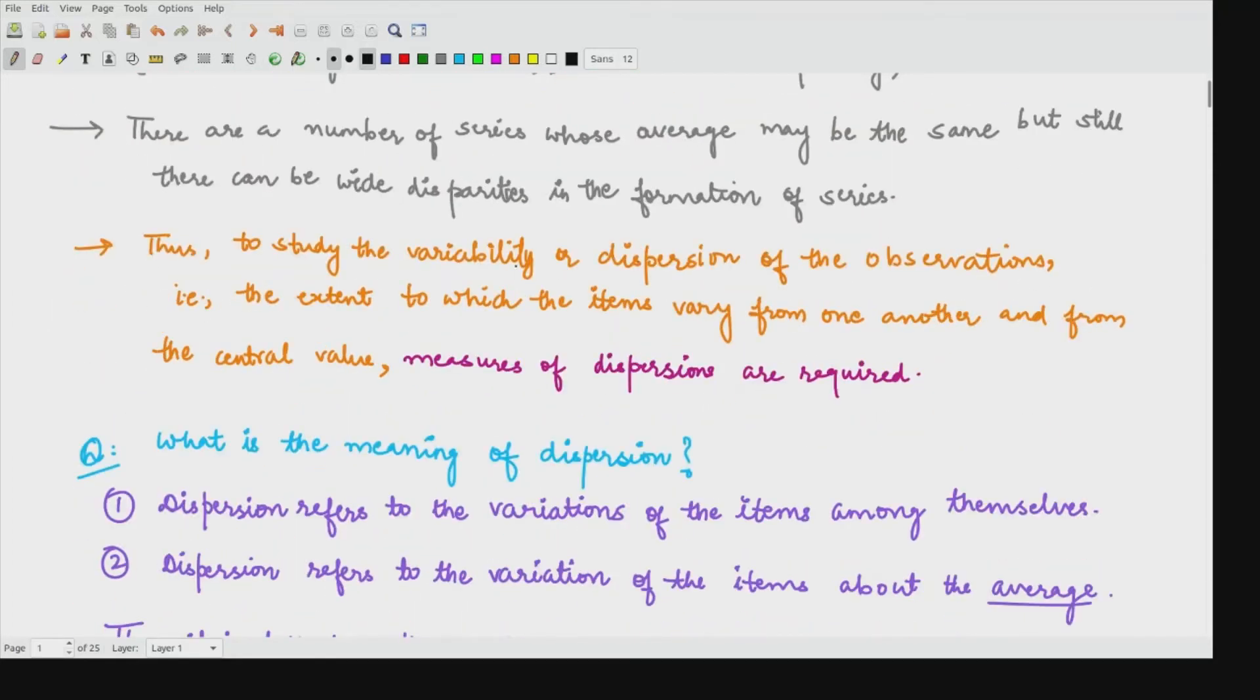Moreover, there are a number of series whose average may be the same but still there could be wide differences in those series. And third thing is that to study how much there is a variability of the data, how much is the data that is spread out in the space. That variability is measured by this dispersion of observations.